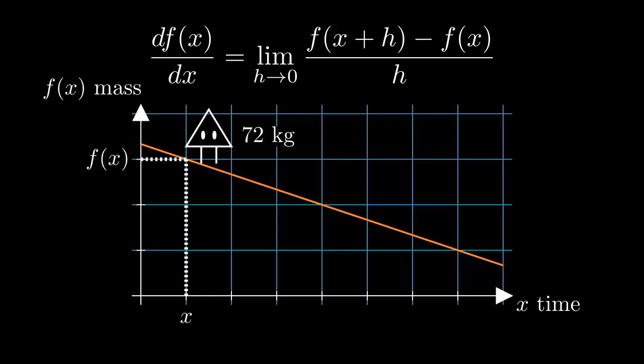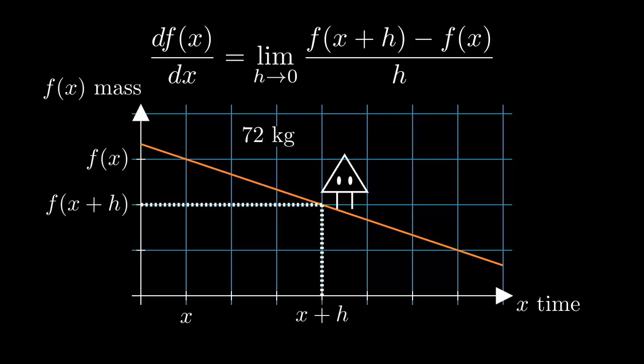To know my mass change, it takes time, in other words, time changed. So, 8 weeks later, the date is x plus h, and my mass function f(x + h) is, say, 71 kg. By the way, h can be 1 day, 1 week, 1 month, or any time period. The important thing is time passed. Let's say h is 1 week.